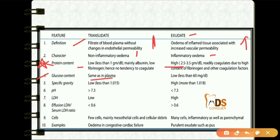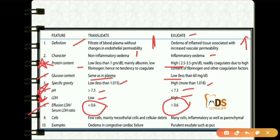Glucose content in transudate is the same as in plasma, whereas in exudate it is low — less than 60 mg. Specific gravity is low in transudate and high in exudate. pH is greater than 7.3 for transudate and less than 7.3 for exudate. LDH is low in transudate and high in exudate. The effusion LDH to serum LDH ratio is less than 0.6 in transudate and greater than 0.6 in exudate.